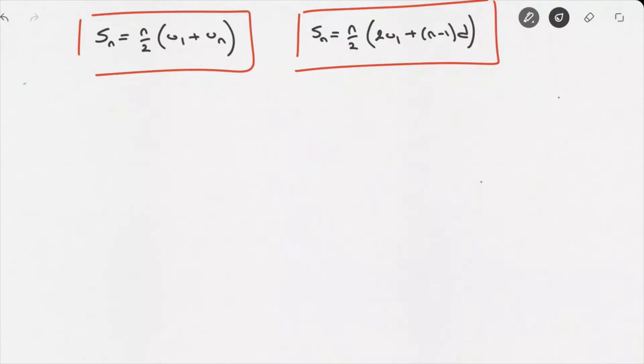Now we'll tend to use this first formula when we know un. In other words when we know the nth term of the arithmetic sequence. So I'll just write un is known. And when we don't know the nth term of the arithmetic sequence or we're not given its formula we'll use the second formula. So I'll just say un, the nth term, isn't known.